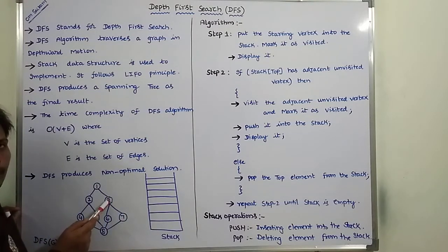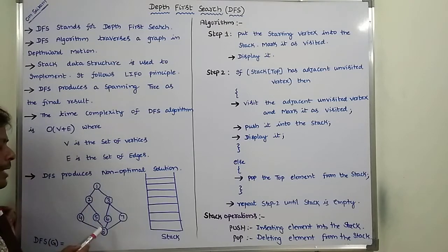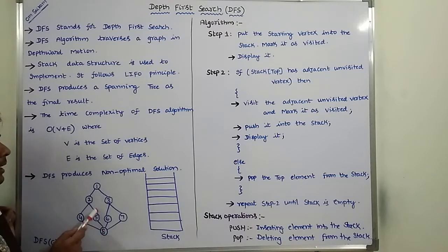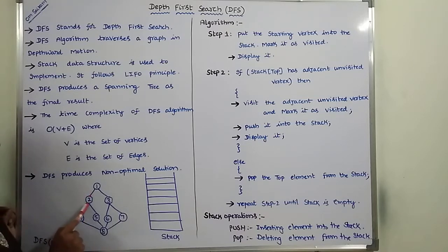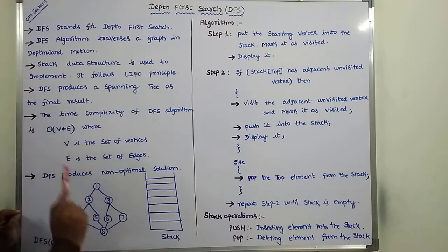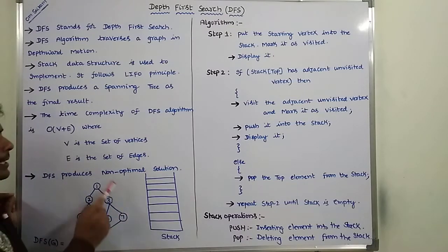Again we have to backtrack. From 3, no adjacent unvisited vertices — backtrack to 6. No adjacent unvisited vertices — backtrack to 8. No unvisited vertices — backtrack to 5. No adjacent unvisited vertices — backtrack to 8, then to 4, then to 2, then to 1. No adjacent unvisited vertices. The DFS order is 1, 2, 4, 8, 5, 6, 3, 7. This is called depth-first motion.